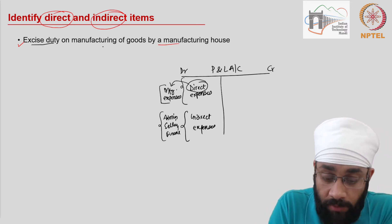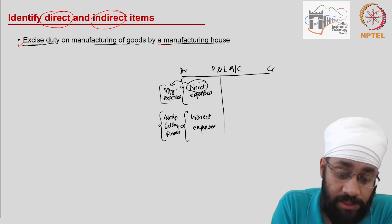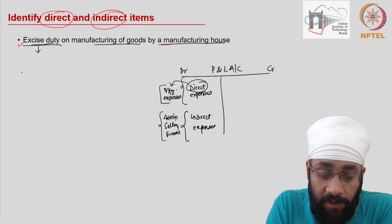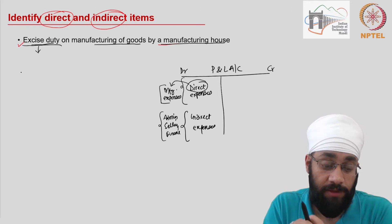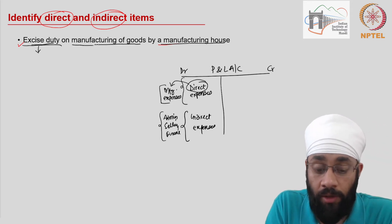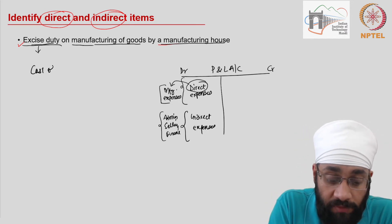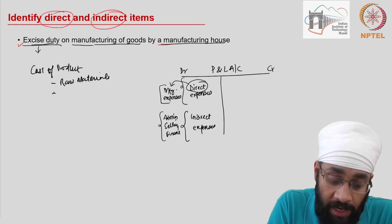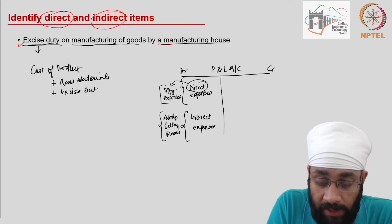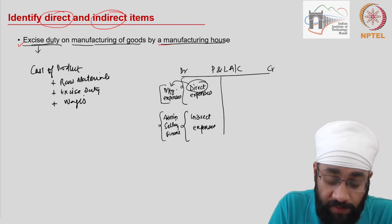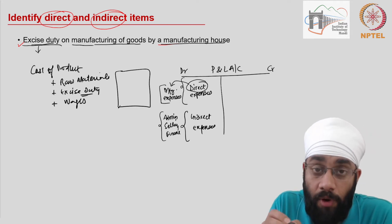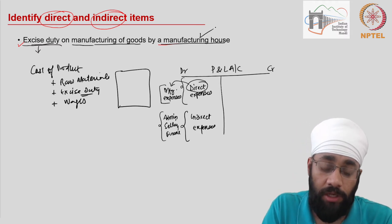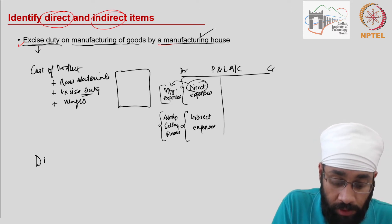The first expense is excise duty on manufacturing of goods by a manufacturing house. Excise duty is paid on anything manufactured or produced on Indian soil, and different kinds of goods have different percentage rates. Since this is incurred during manufacturing, the cost of the product includes raw materials plus excise duty plus wages. Excise duty directly contributes to the cost of the product being manufactured, so we categorize this as a direct expense.